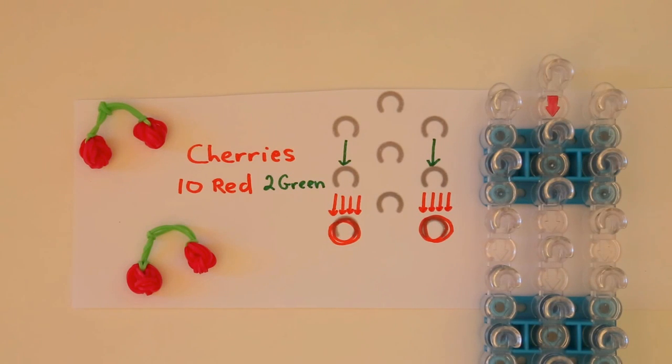Hi, this is Kim from Made by Mommy continuing my Fruit on the Loom series with a really easy and cute pair of cherries. This design could also be used to make blueberries.